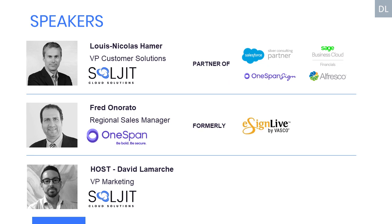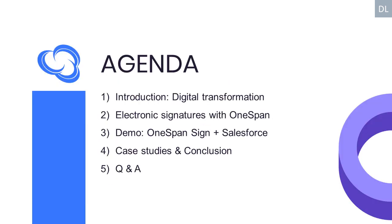The agenda includes a brief introduction about digital transformation, electronic signatures with OneSpan, what makes OneSpan stand out, a demo of OneSpan with Salesforce, case studies, and a Q&A. The presentation will last about 35 to 40 minutes, so it will end well before the start of the Croatia-England World Cup game.